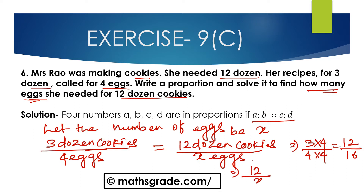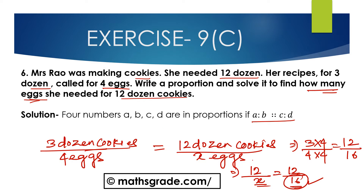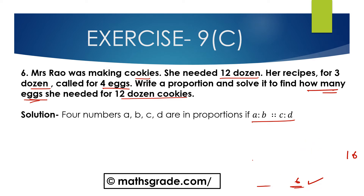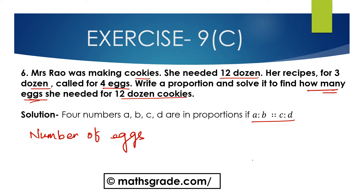So 12 divided by x is equal to 12 divided by 16, therefore x is 16. The number of eggs needed is 16.